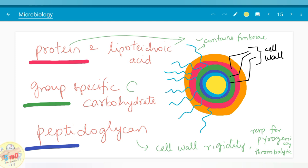The second, third, and fourth layer that constitutes the cell wall: the pink layer as denoted here is made of protein and lipoteichoic acid. It contains fimbriae for attachment to the host. The middle layer is made up of group specific carbohydrate with which Lansfield classified the bacteria into 20 groups. The third layer, the inner layer, is made of peptidoglycan. It is responsible for the cell wall rigidity and is also responsible for the pyrogenicity, that is the ability to induce fever, and thrombolytic capability of this bacteria.